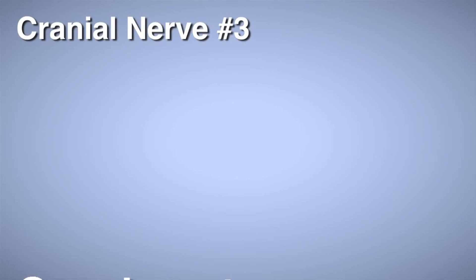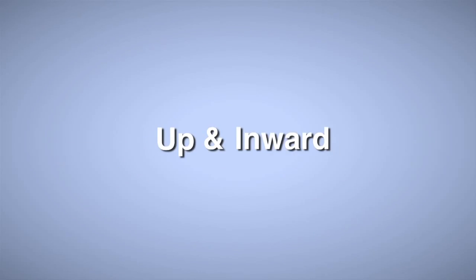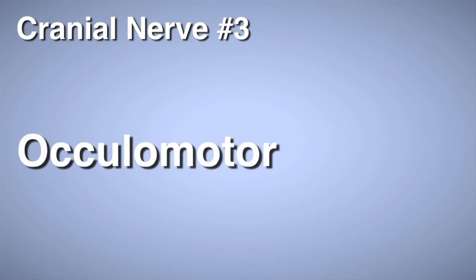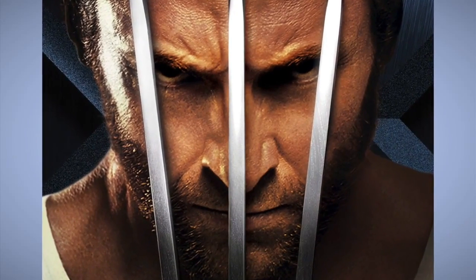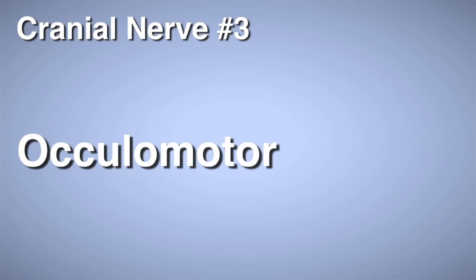Number 3 is your oculomotor. This makes your eyes move in an inward-upward motion — the motor movement of your oculars, your eyes. The way to remember this is making three fingers and putting them up in front of your face, like Wolverine from the X-Men movie. The three spikes go up in front of your face and your eyes go inward and upward.